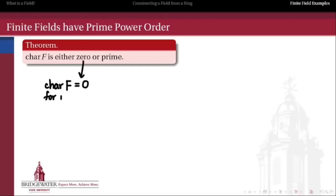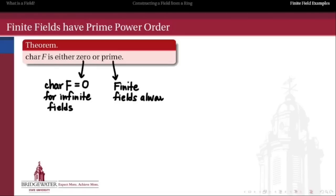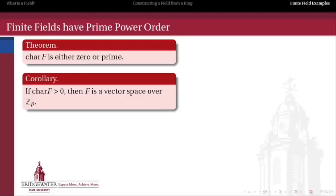Fields with characteristic 0 are our infinite fields, and any finite field is going to have a characteristic that is a prime number. Sometimes algebraists use the phrase 'field of positive characteristic' to refer to a finite field. A corollary is that if I have a field of positive characteristic, then that field is a vector space over the field Z mod p, where p is the characteristic.